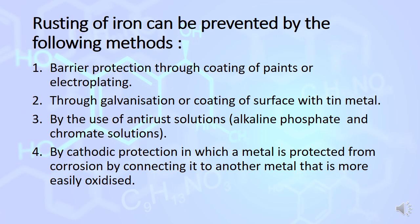Rusting of iron can be prevented by following methods: First, barrier protection by coating with paints or electroplating with a less reactive metal. Through galvanization or coating of surface with zinc metal. Galvanization is coating with zinc. By use of anti-rust solution. By cathodic protection in which metal is protected from corrosion by connecting with another metal that can easily oxidize.